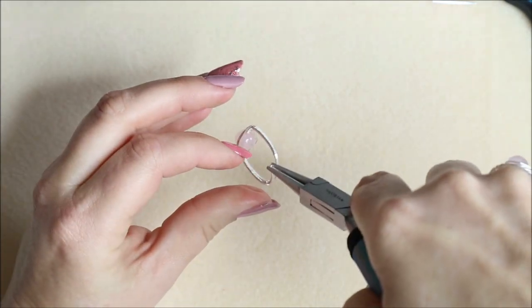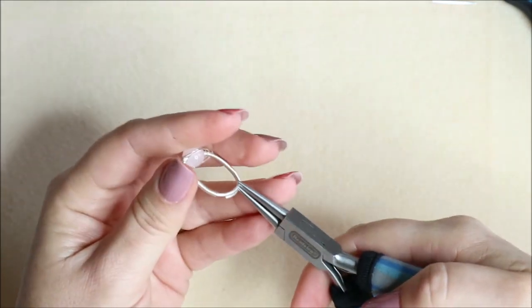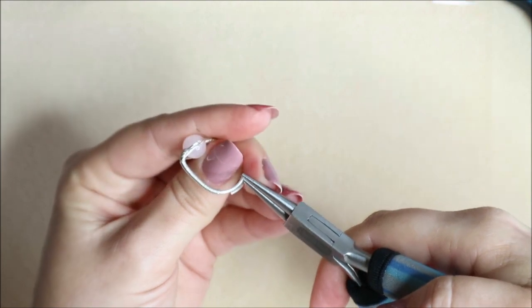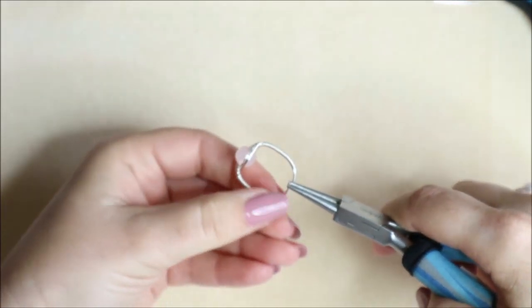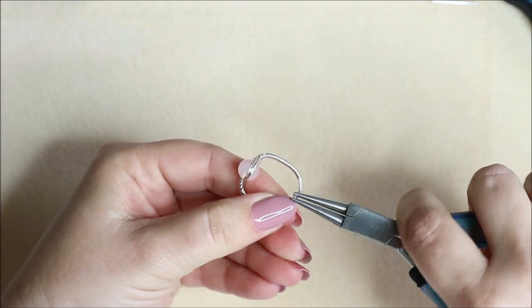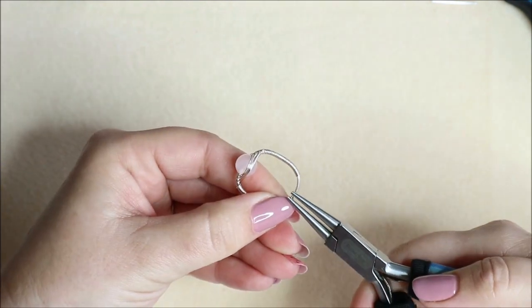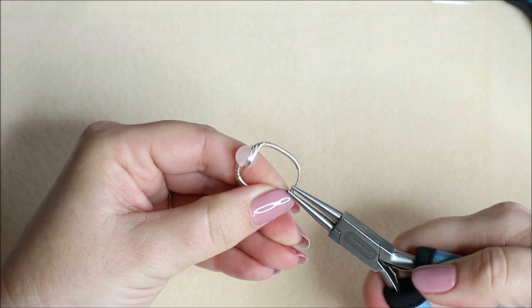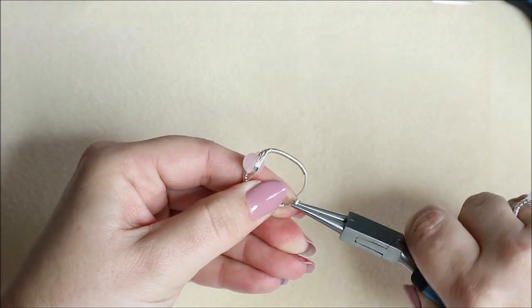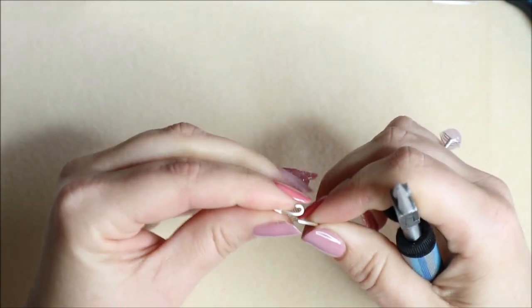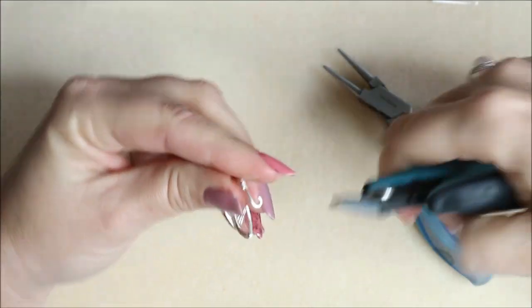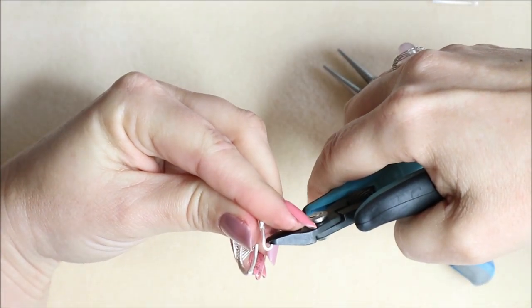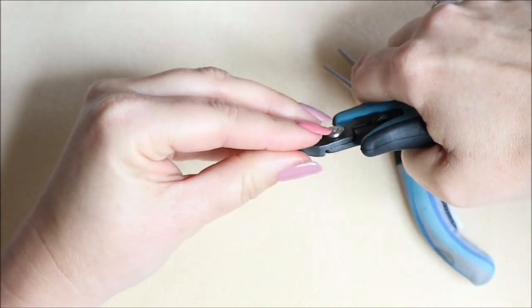And then all we're going to do is pop our round nose pliers in and turn them upwards so they're coming away from each other. So popping my pliers in right at the tip of that top piece of wire there. So if I just pull them apart slightly, you can see them on that top piece of wire. Just support it with your fingers right on the tip and just start turning. So turning right on the very tip there.